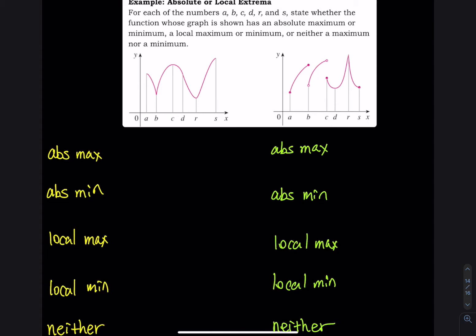For the first picture, the absolute max is the highest y value, which occurs when x equals s. The lowest y value — the absolute minimum — is when x equals r.